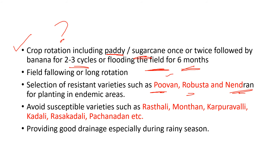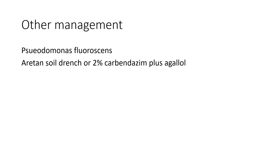Use resistant varieties and avoid susceptible ones, even if they may yield higher profit. Susceptible varieties to avoid include Rastali, Mundhan, Karpuravalli, Kadali, Rasakadali, and Panchanadan — these are highly susceptible to infection. You should also ensure good drainage, especially during the rainy season, as constant flooding greatly increases the probability of infection spreading across the entire crop.